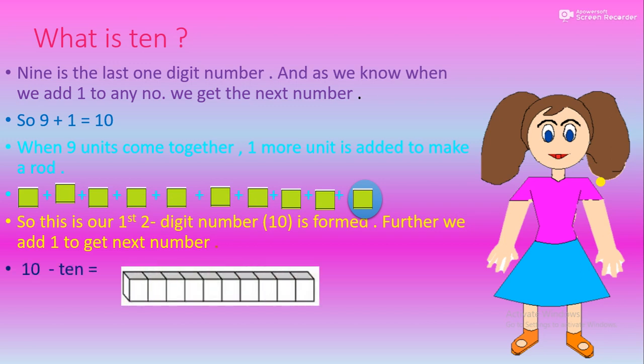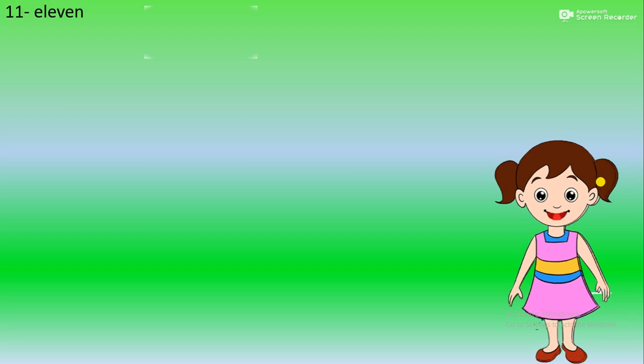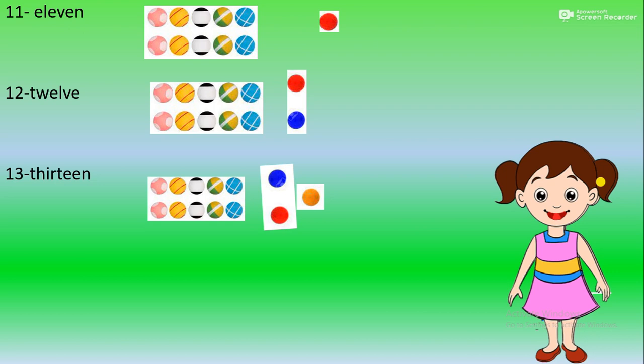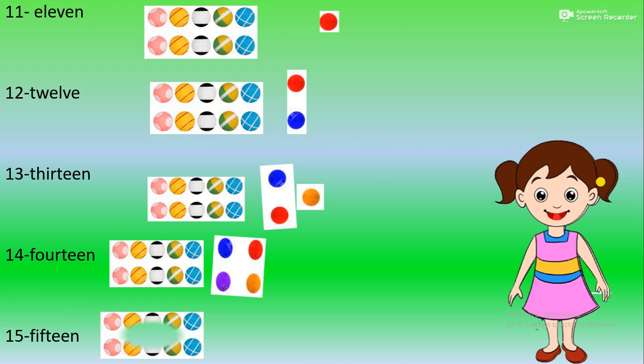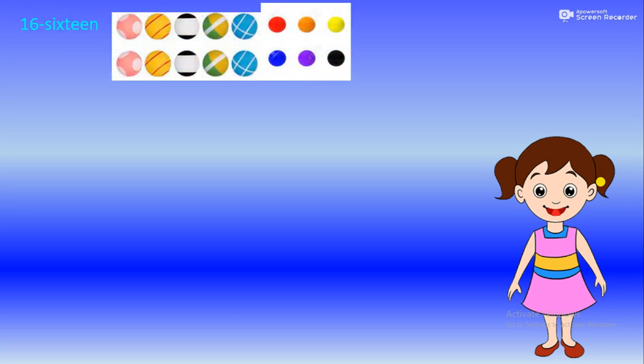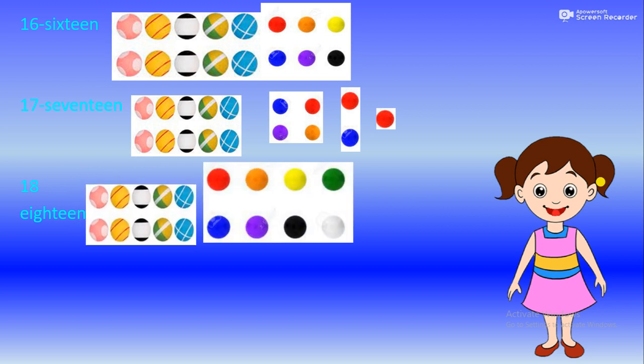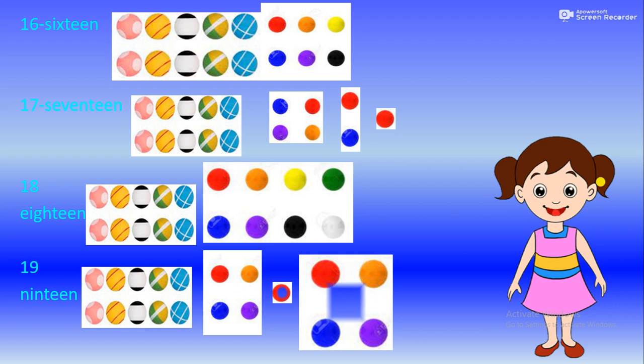Further, we add 1 to get the next number. E-L-E-V-E-N-11, T-W-E-L-V-E-12, T-H-I-R-T-E-E-N-13, F-O-U-R-T-E-E-N-14, F-I-F-T-E-E-N-15, S-I-X-T-E-E-N-16, S-E-V-E-N-T-E-E-N-17, E-I-G-H-T-E-E-N-18, N-I-N-E-T-E-E-N-19.